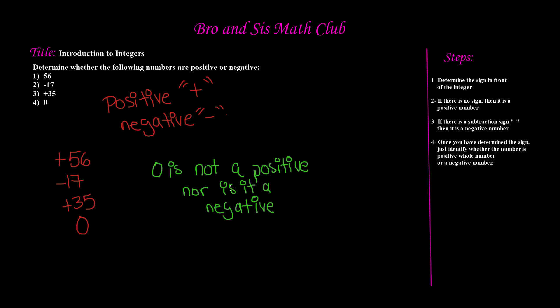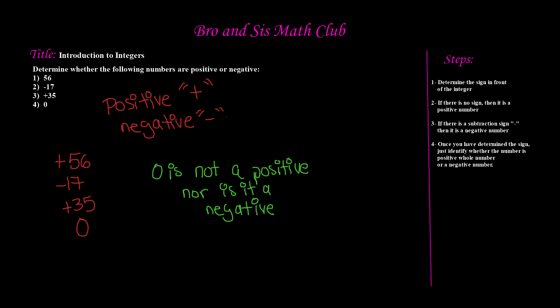Now that we have determined the sign — and step three also said that if there's a subtraction sign, it is a negative number — step four says: once you have determined the sign, just identify whether the number is a positive whole number or a negative number. We already know if it has a plus sign it's positive, minus sign it's negative. So we'll go ahead and write whether it's a positive or a negative.